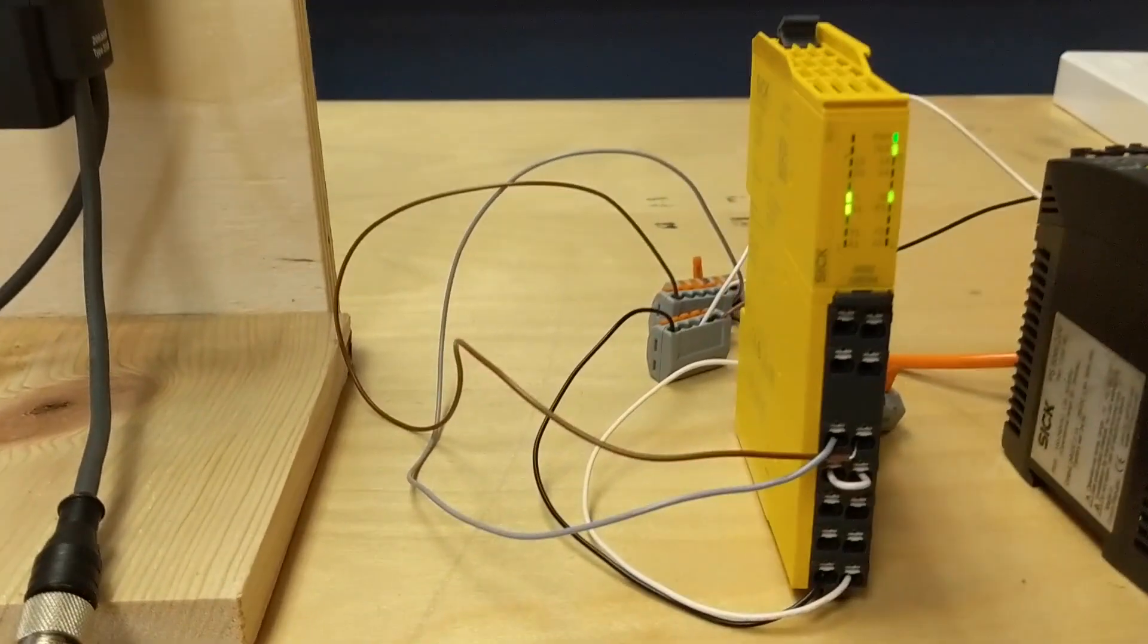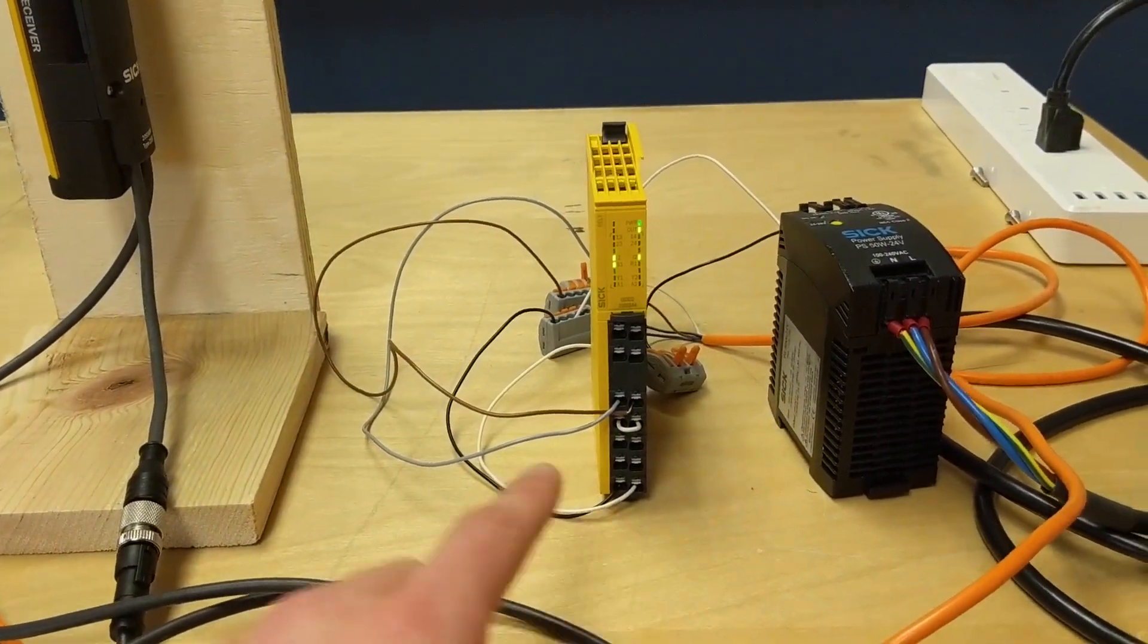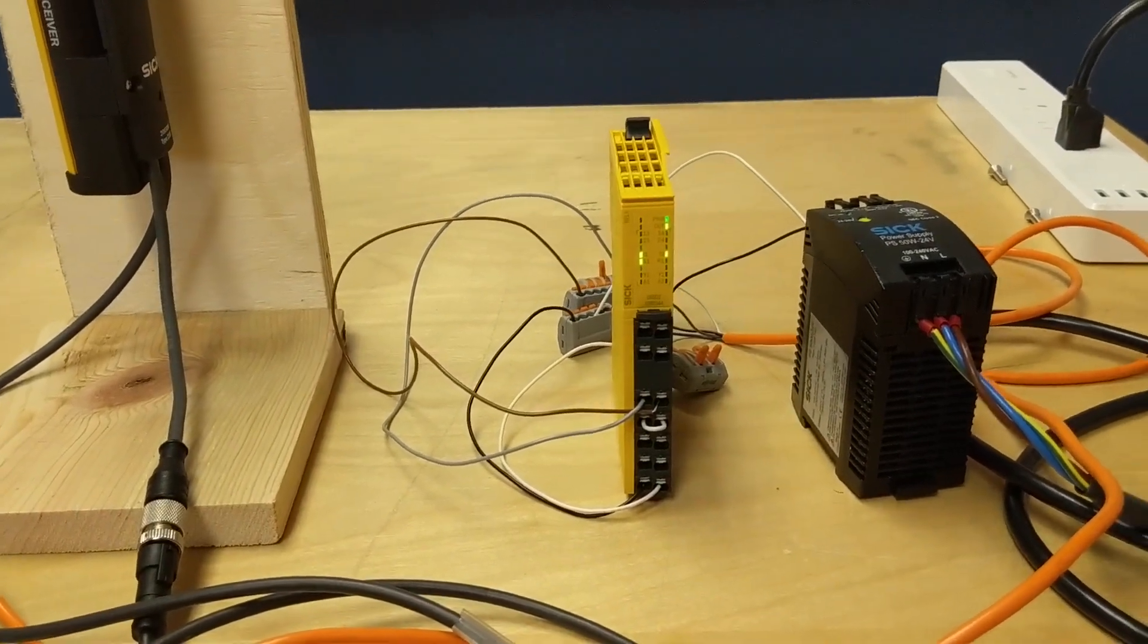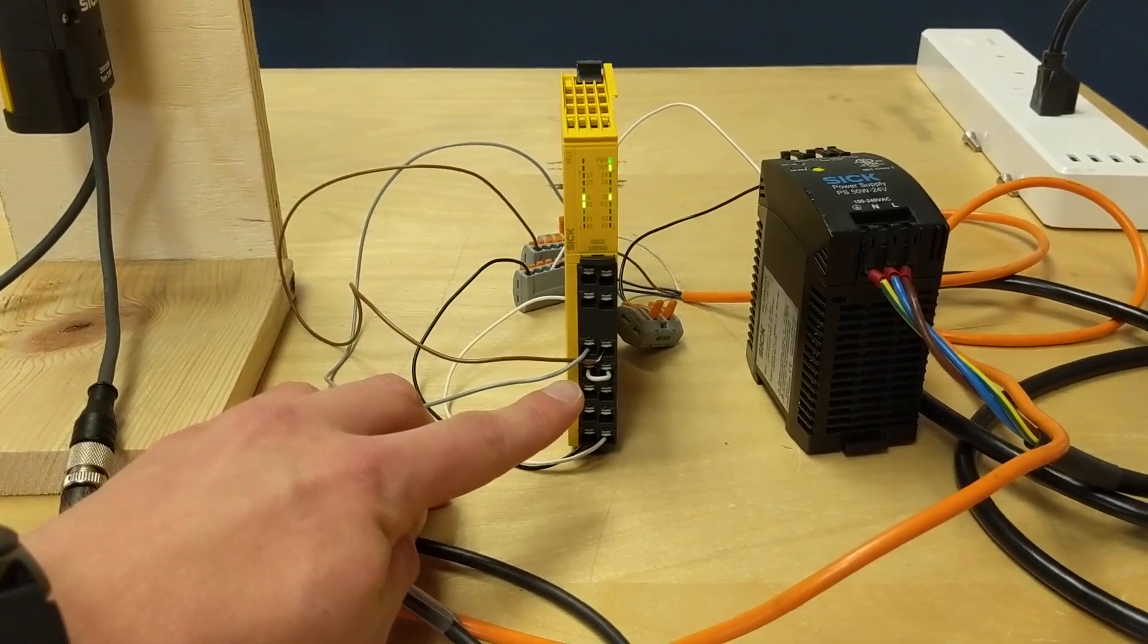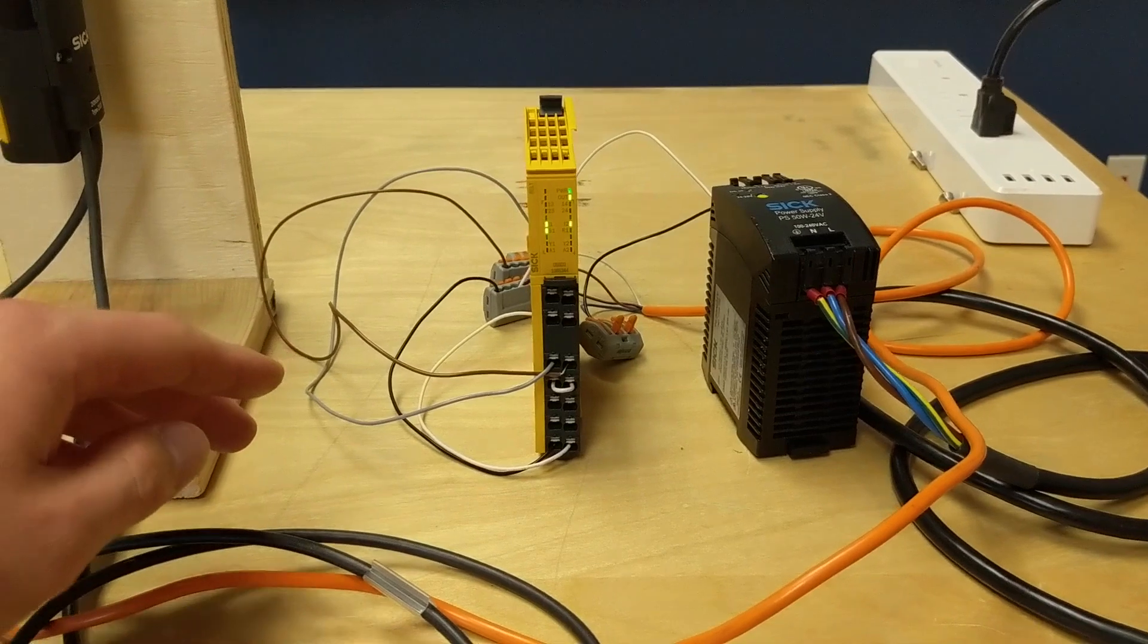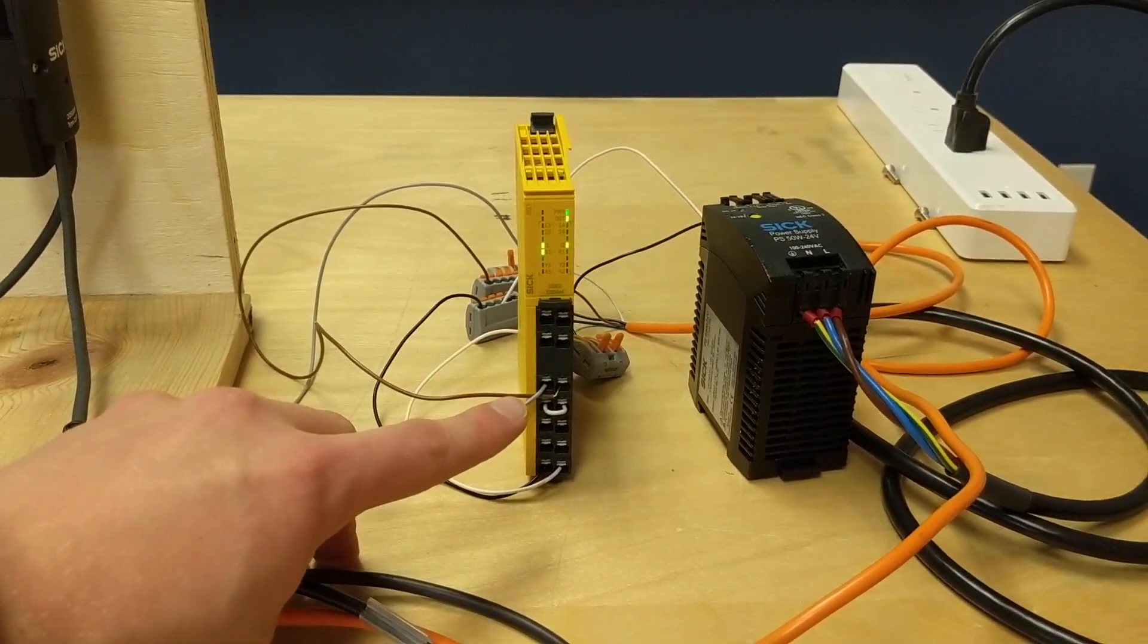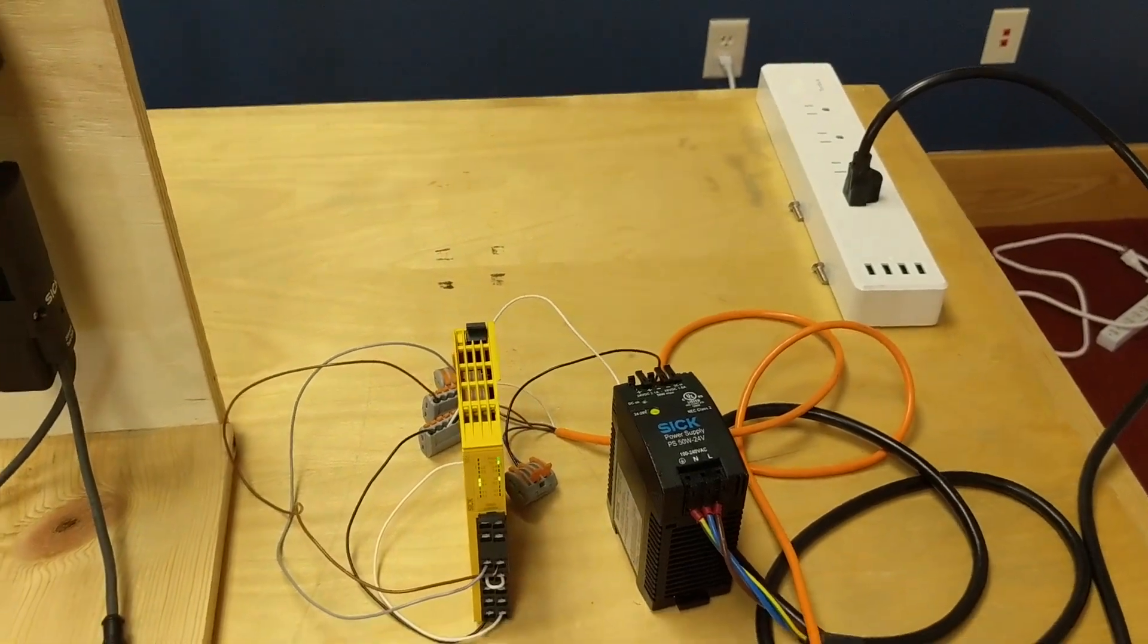As you can see, I have the A1 and A2 hooked up to 24 volts and 0 volts respectively. Then I have a jumper between S1 and R1 for an automatic reset within the safety relay, and I have both safety inputs I1 and I2 connected to the OSS-D wires of the cable.